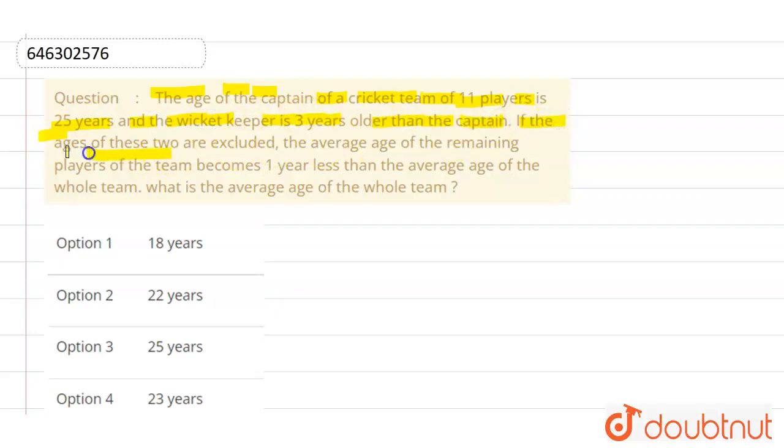If the age of these two are excluded, the average age of the remaining players of the team becomes 1 year less than the average of the whole team.